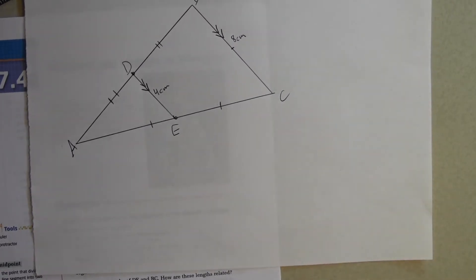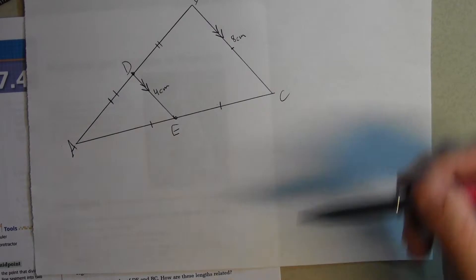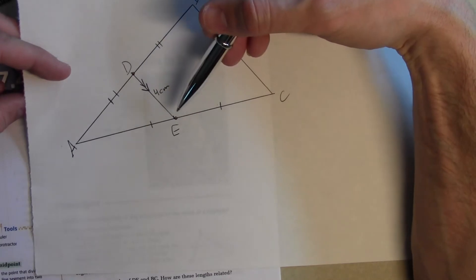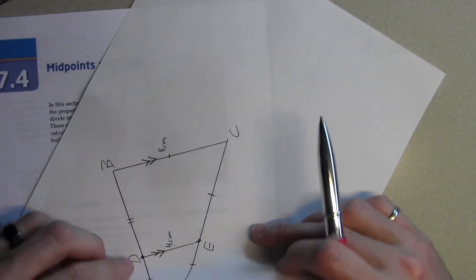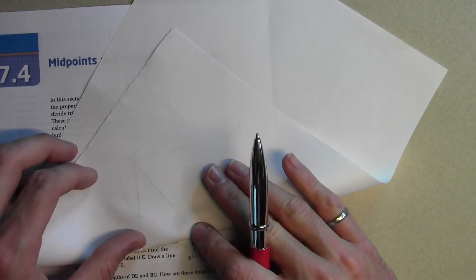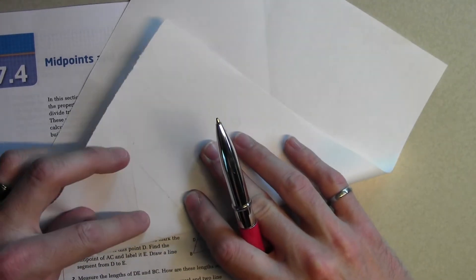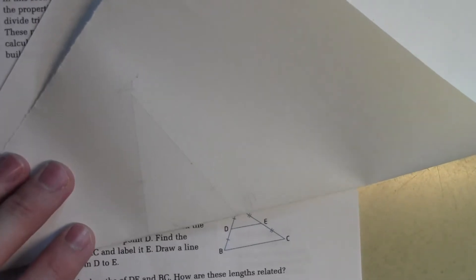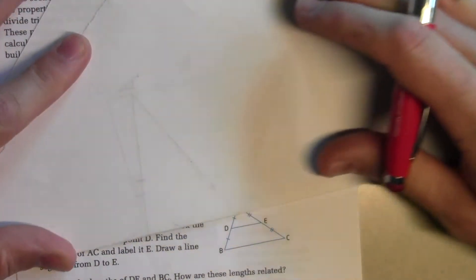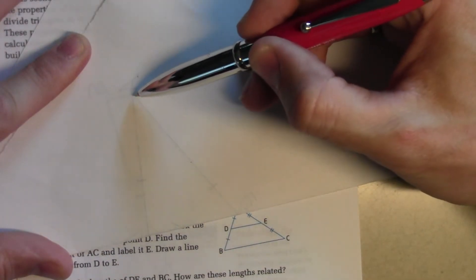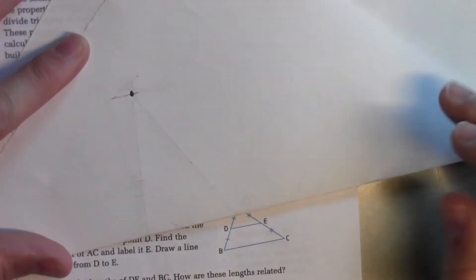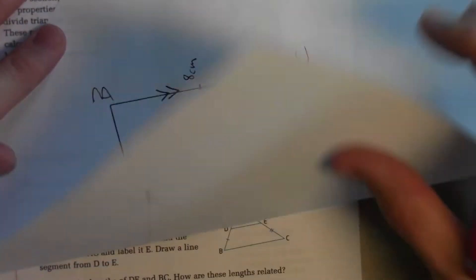Fold your diagram across the line through points D and E. Where does the vertex A touch the lower part of the diagram? So across the line D and E. Where does vertex A touch? We're going to fold right across D and E. And if you can see it on the screen through the paper. Can you guys see that? Vertex A is right there which is on the other side of the triangle.